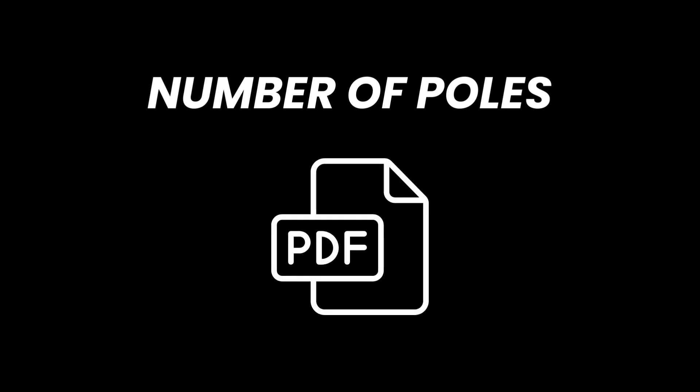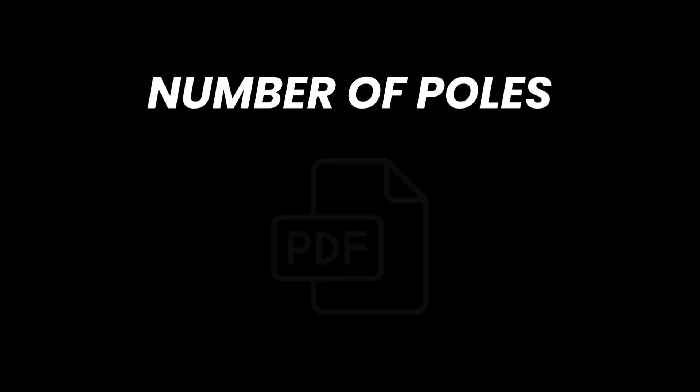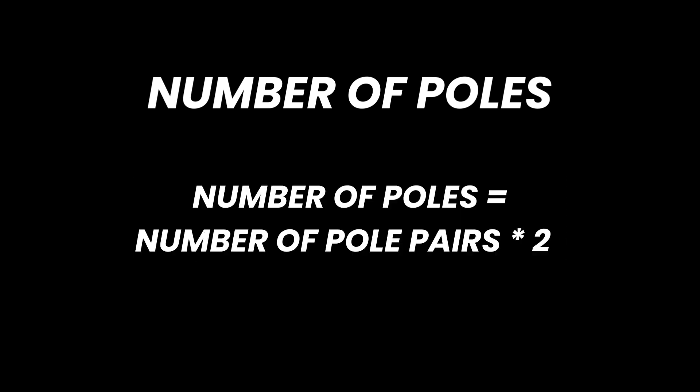Number of poles. The number of poles is crucial information for ensuring the motor controller's correct performance, which is why it is important to assign the correct value. It's possible to find the number of poles in the data sheets of the motor. If the data sheet provides the number of pole pairs, multiply it by two to obtain the correct number of poles.